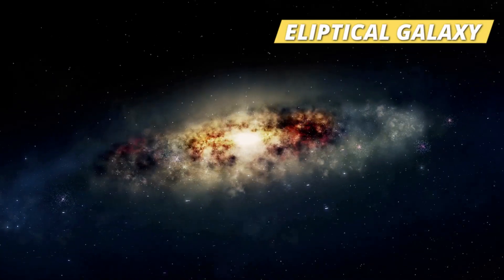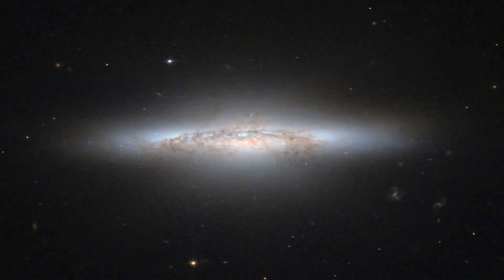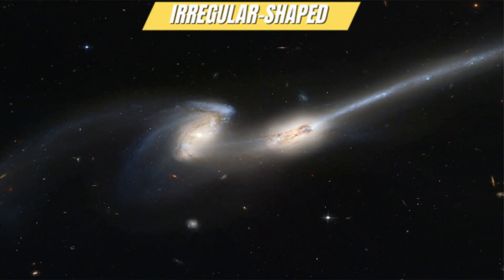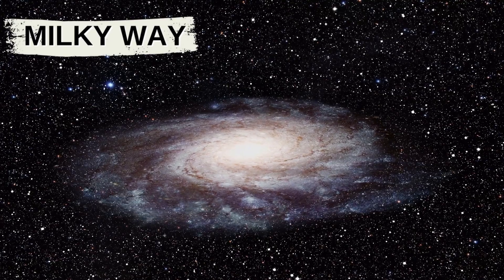There are galaxies which are elliptical, spiral, lenticular, or irregular shaped. Our Milky Way galaxy is spiral shaped.